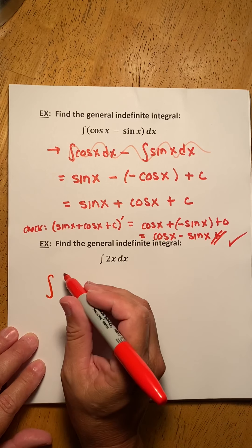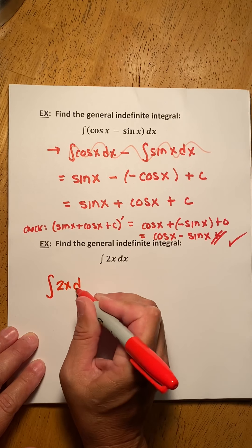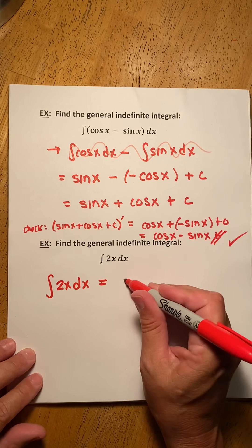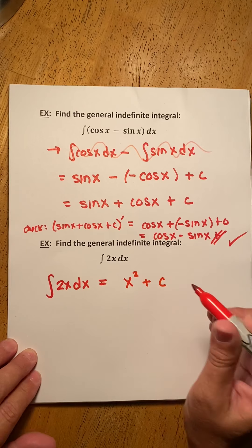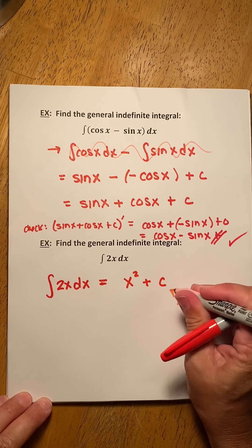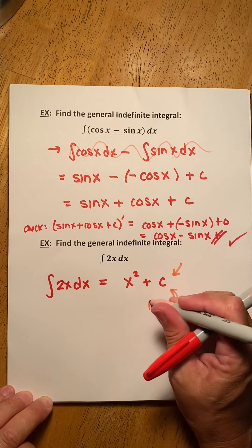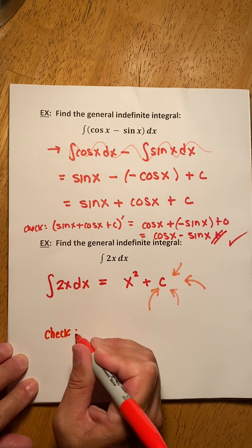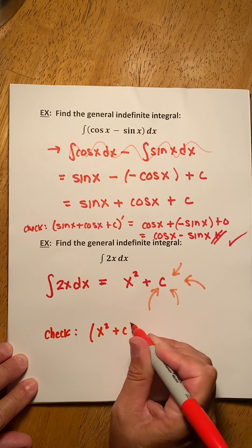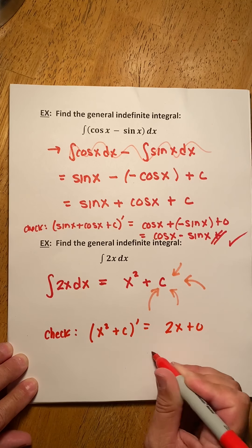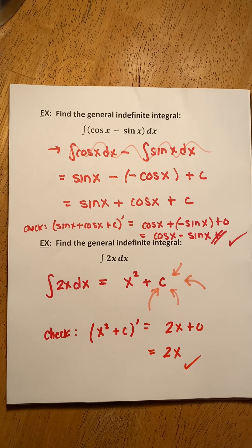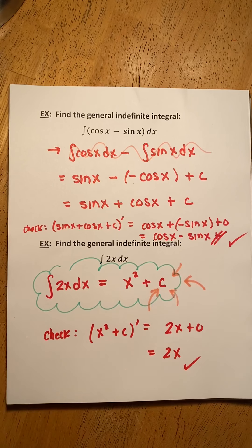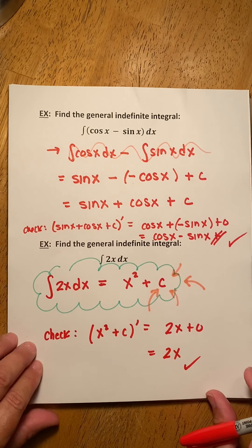Let's find the general antiderivative of 2x. We're looking for the infinite collection of functions whose derivative is 2x. Hopefully you said x squared — but don't forget to add our integration constant. This is really important. We can check: the derivative of x squared plus C is just 2x plus 0, which is 2x, and that's what we started with. So the indefinite integral of 2x with respect to x is x squared plus C.